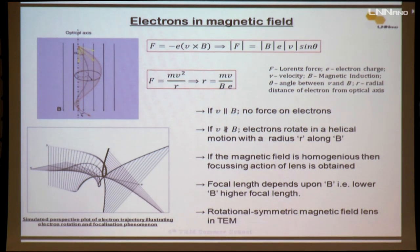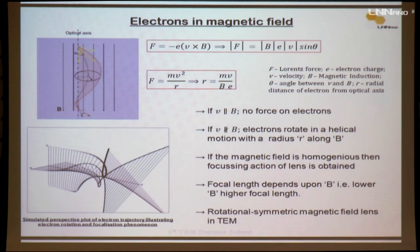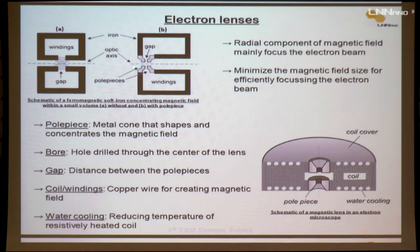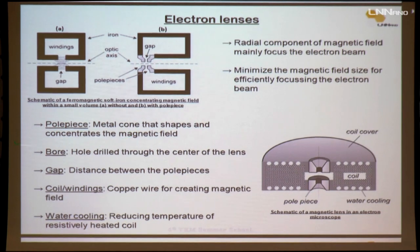If the magnetic field is homogeneous, the focusing action is like that obtained using a lens. The focal length depends on the magnetic field induction — lower B gives higher focal length. The lenses used in TEM are rotational symmetric magnetic lenses. The two types of electromagnetic lenses used consist of iron winding with a gap and a hole. By circulating electric current through the coil winding, a magnetic field is generated at the gap — the pole piece. Important parts include the pole piece (metal cones that shape and concentrate the magnetic field), the bore (hole drilled through the center), and the gap (distance between the two pole pieces). Bore-to-gap ratio is a key parameter in lens design. The copper coil windings generate the field, and a water cooling system is required to reduce heat.